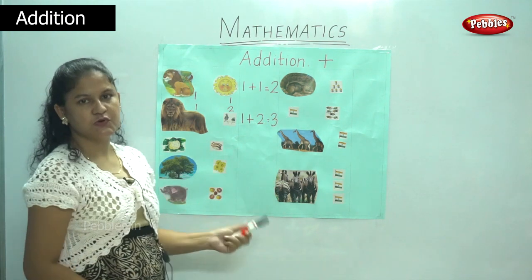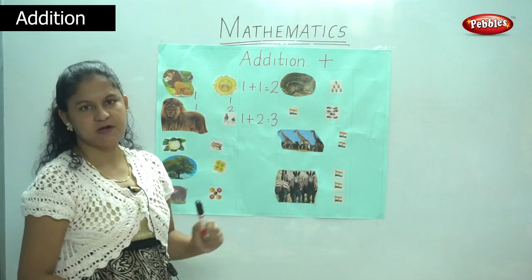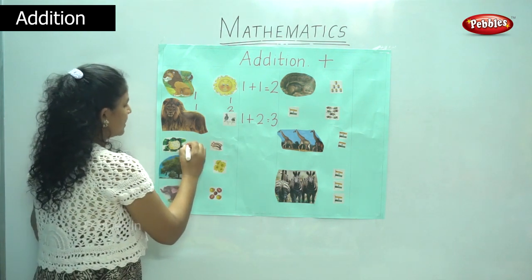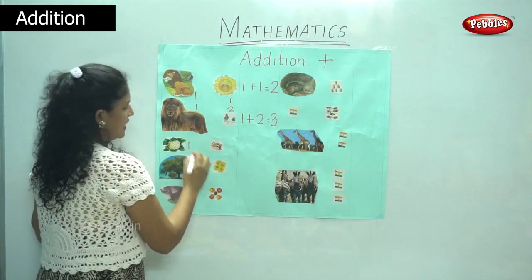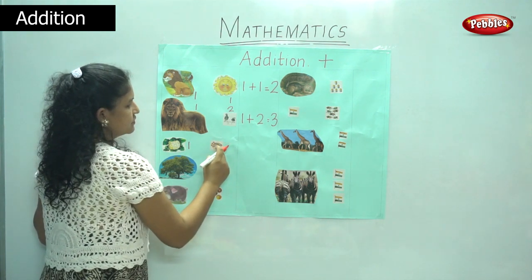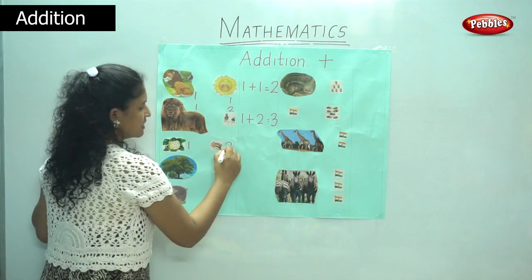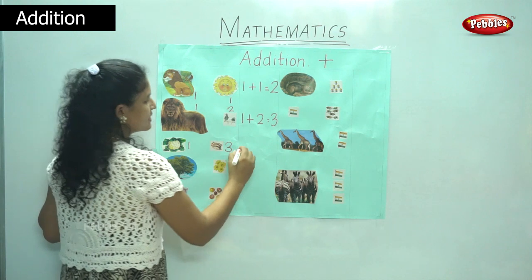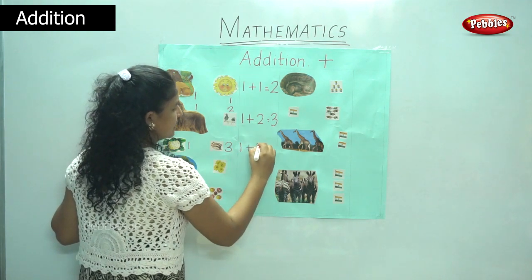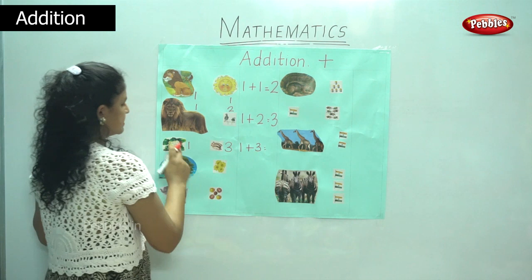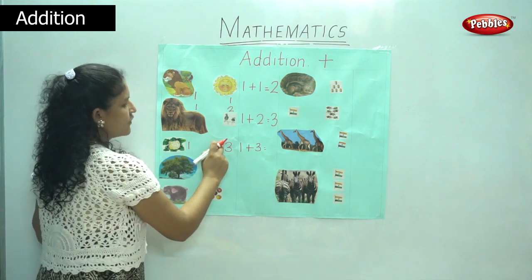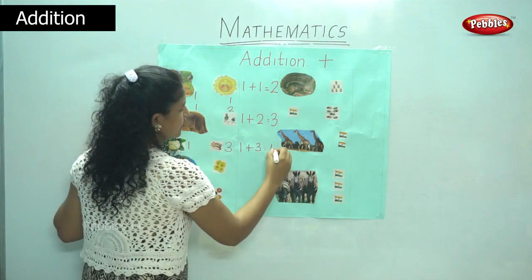So one plus two is three. In the next picture I have one cauliflower and three fish. So it is one plus three. One plus three is one, two, three, four — is four.